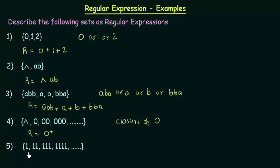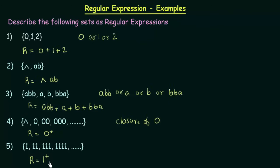Let's come to the last one. Here we have 1, 11, 111, and so on. This also means any strings that can be formed by using the symbol 1 — you can put any number of 1's together. Is this the closure of 1? It looks like the closure of 1, but this is not the closure of 1. We can call it a closure only when all the strings formed by the symbol along with the empty symbol are included. But here the empty symbol is not included, so we cannot call this a closure. Instead, you denote it as R = 1⁺, using a cross symbol instead of a star. This denotes the closure of a symbol excluding the empty symbol.